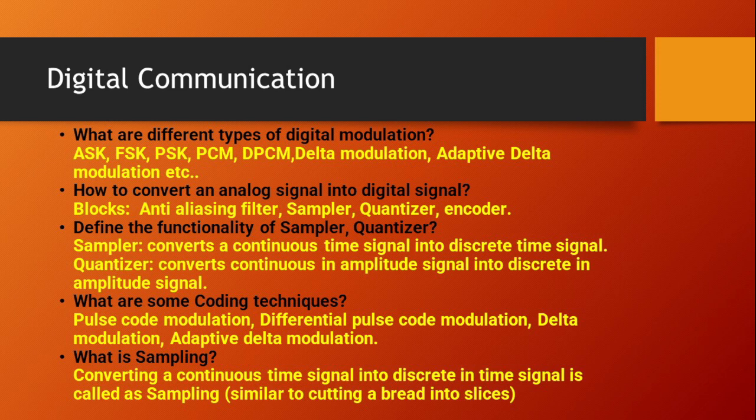Define the functionality of sampler and quantizer. The sampler converts a continuous time signal into a discrete time signal. The quantizer converts a continuous in amplitude signal into a discrete in amplitude signal. This is the difference between a sampler and a quantizer.